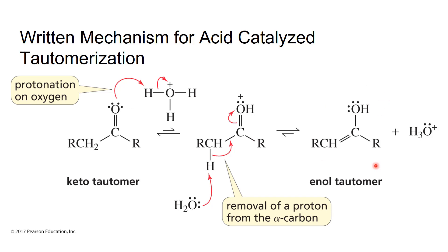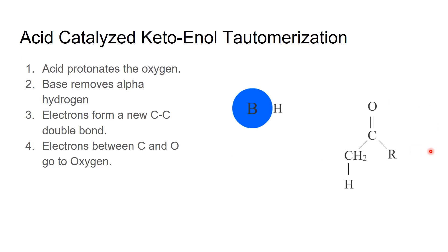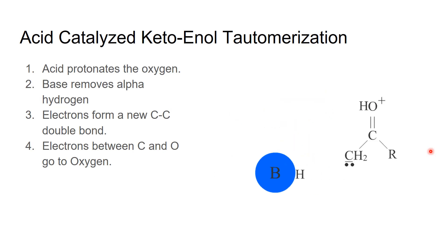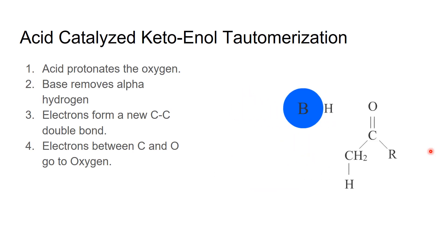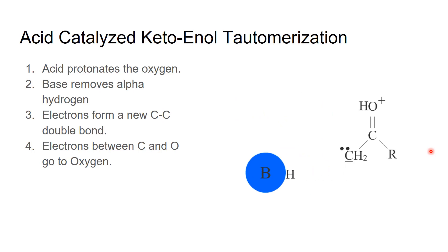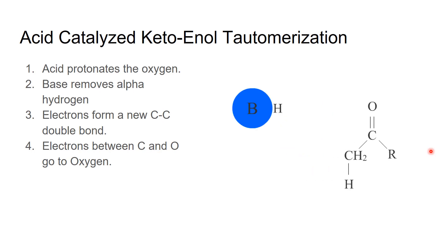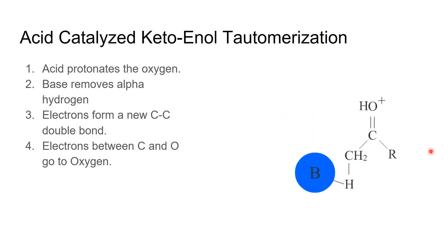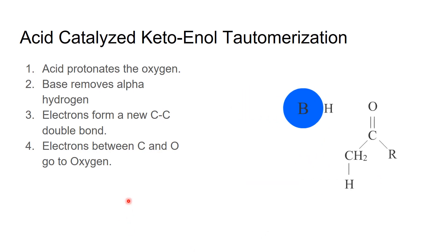Those electrons are then kicked up to the oxygen, getting rid of the positive charge. Now we have our enol tautomer and the acid is reformed — so it's a true acid catalyst. The animation shows the protonation, then the deprotonation of the alpha carbon, and then the formation of the double bond.